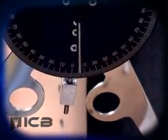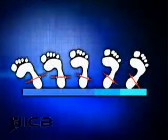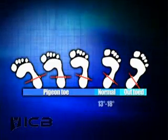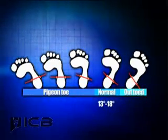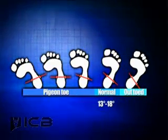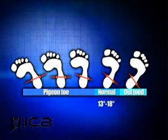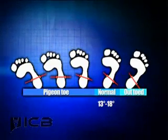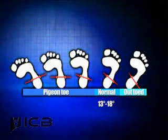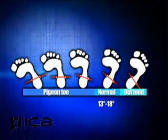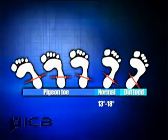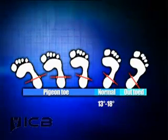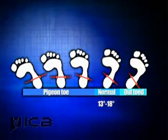Pigeon toe is indicated by a reading below 13 degrees, while out-toe is above 18 degrees. Both conditions result in soft tissue hip compensations to correct the position of the foot in the swing phase of the gait cycle.